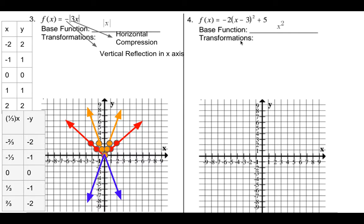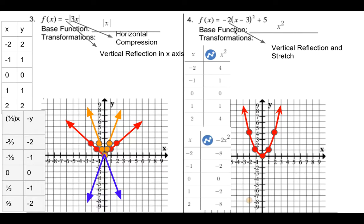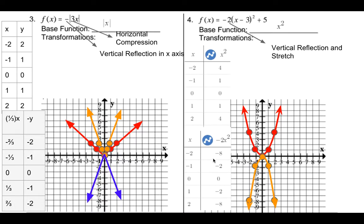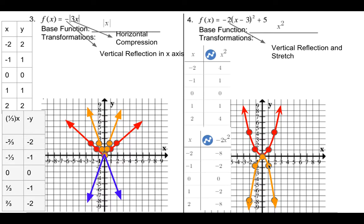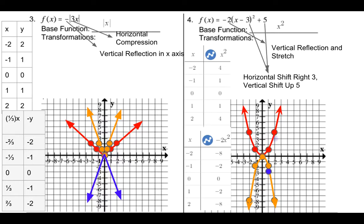The base function here is the x squared graph. The base points are the squares of inputs from negative two to two. We have a vertical reflection and a stretch with the a value, so we multiply all y values by negative two — giving us points like (negative 2, negative 8). You can see the reflection and stretch simultaneously; the orange graph is a bit taller and skinnier than the red. Then we shift right three and up five, taking every orange point right three and up five, giving us a downward-opening parabola.